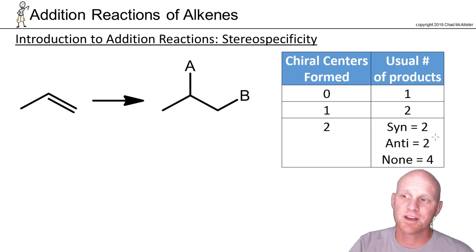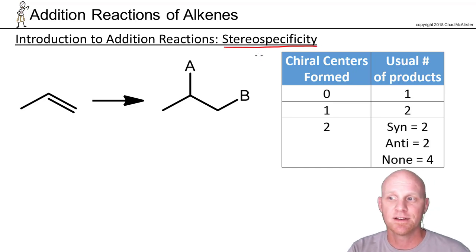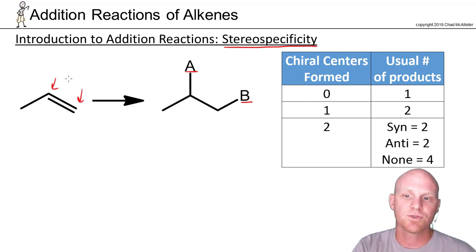In addition to regioselectivity, we've also got to talk about what's called stereospecificity here, which is related to some specificity in terms of stereochemistry of your products. So if you look at those two groups you add, in this case I've identified A and B here, you have a chance of forming two new chiral centers. On the reactants here, those two carbons are sp2 hybridized and therefore trigonal planar.